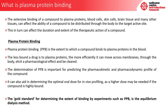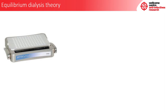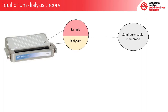The gold standard for determining the extent of binding by experiments such as PPB is the equilibrium dialysis method. This method consists of the use of a 96-well dialysis block, which is composed of Teflon bars labelled A to I in a metal holder with clamp. The 96 wells are sectioned in half with a semi-permeable membrane. In the top chamber of each well is sample, which could either be plasma, blood, or tissue homogenate and drug.